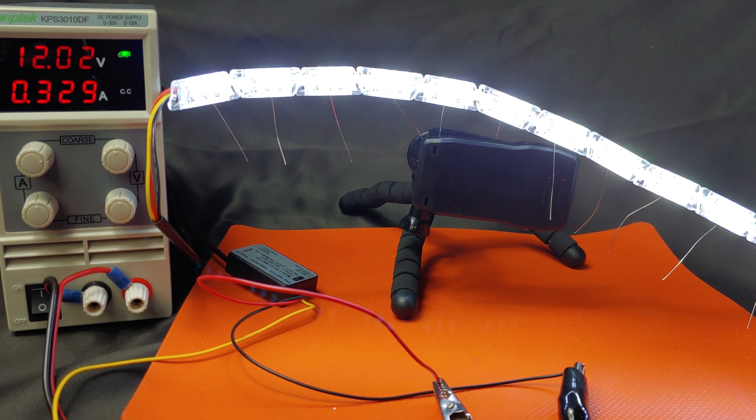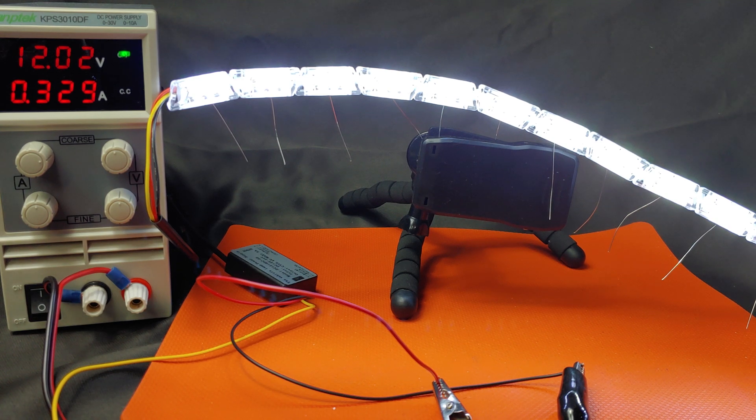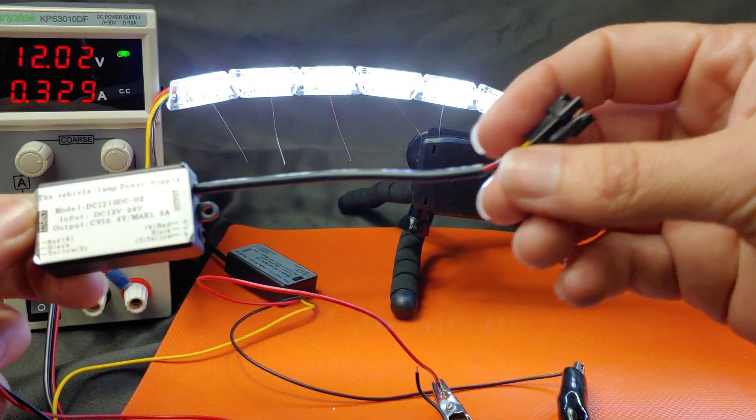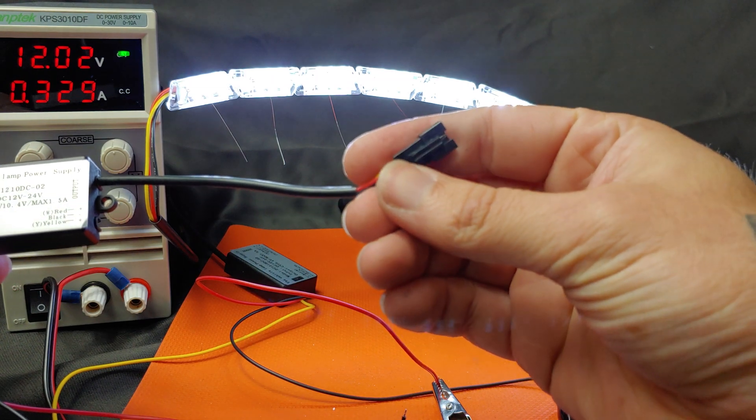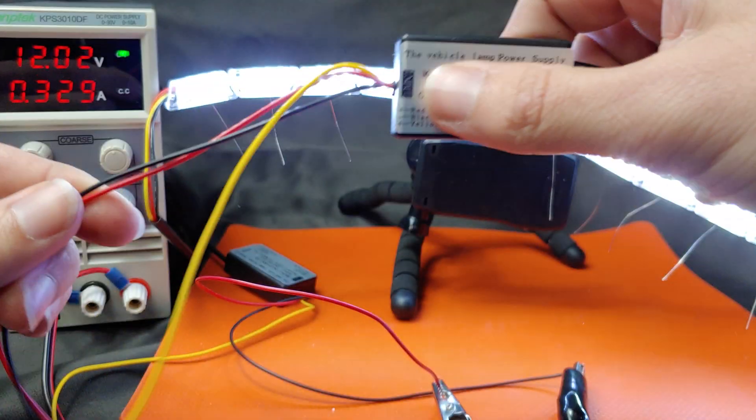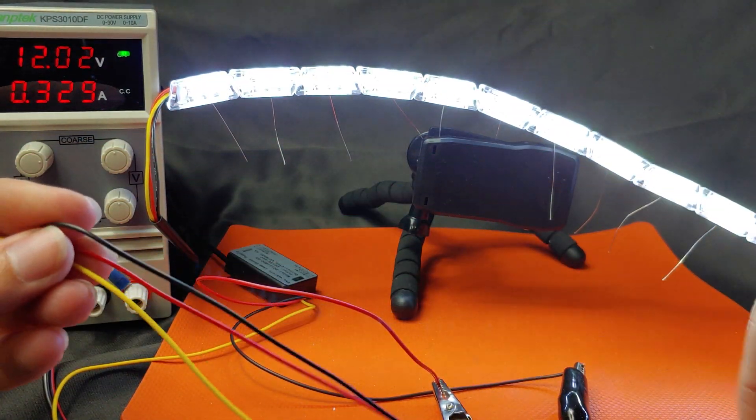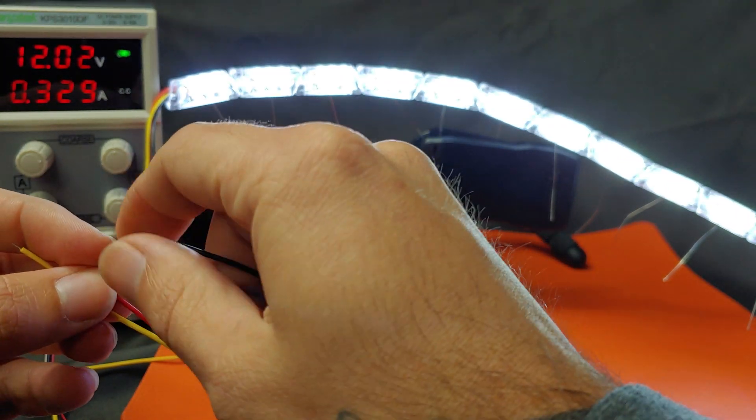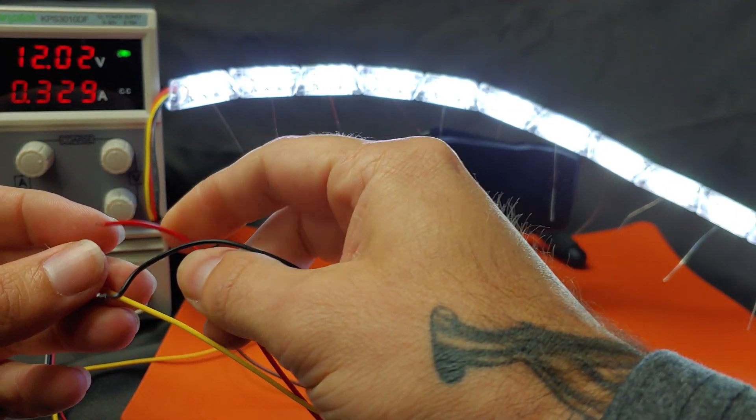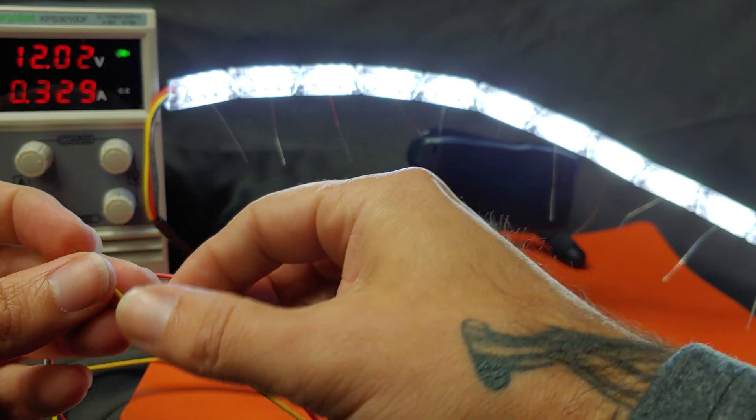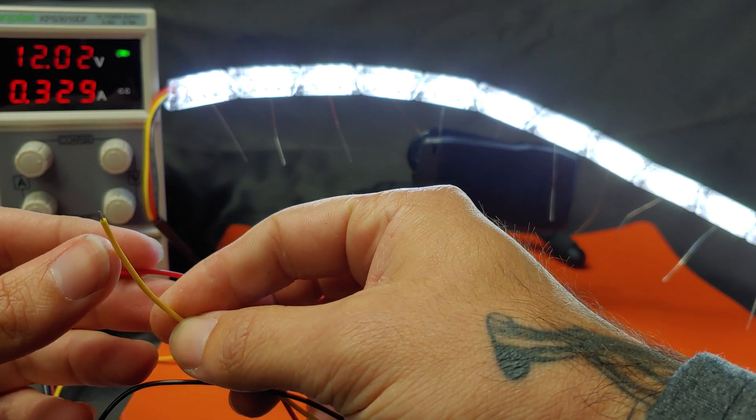Each strip comes with its own driver assembly. The driver has one main plug for the strip and three wires for your housing. The black wire goes to ground, the red wire goes to your DRL, and your yellow wire goes to your turn signal.